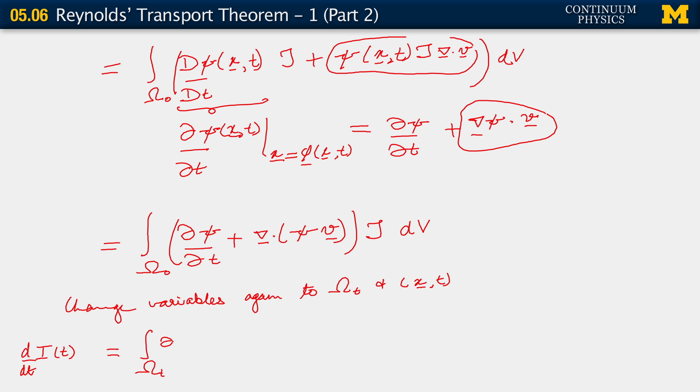We have the partial, the proper partial time derivative of psi, plus this divergence term acting on psi times the spatial velocity.